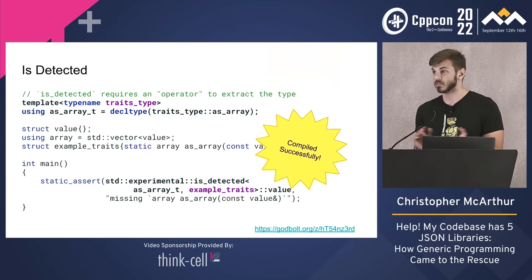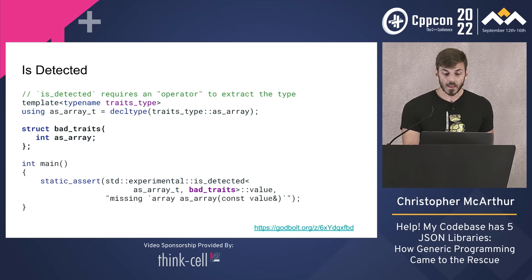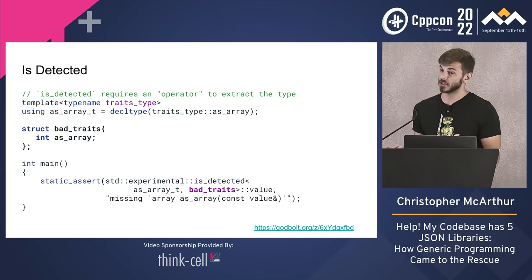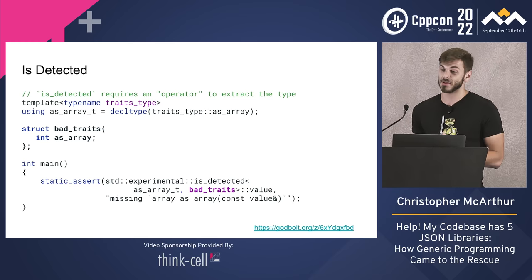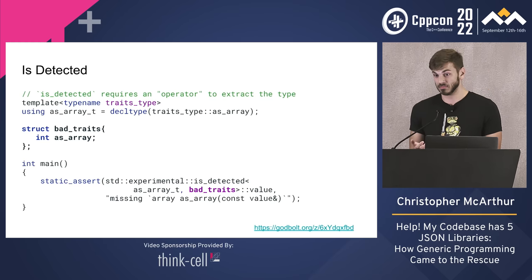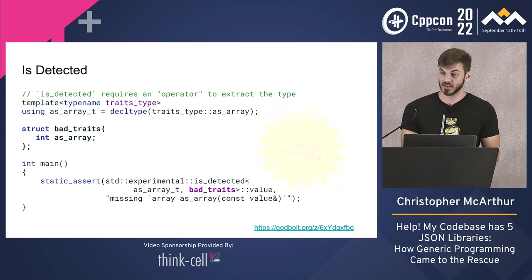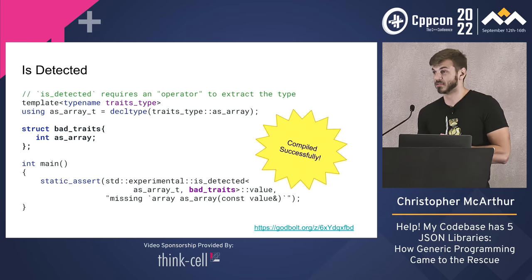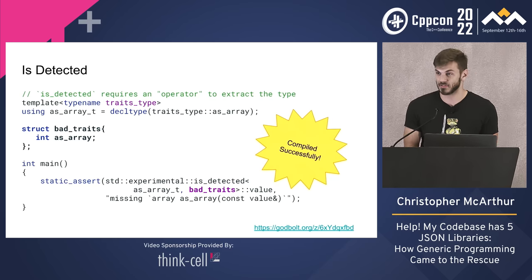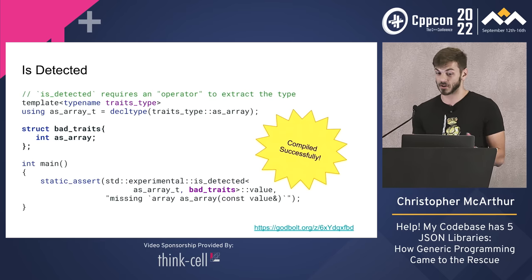When we use that in a static assert and give it our example traits, it returns true — compiled successfully. But if we take something like bad_traits, which has a member that's an integer just called as_array, this also compiles because it's just a named entity — it's not a function, and not the function we need either.